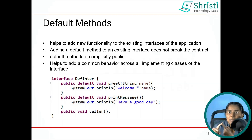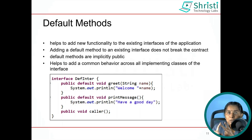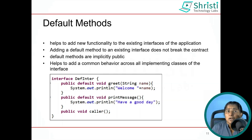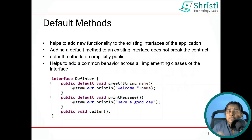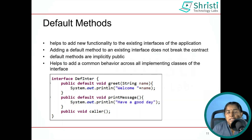Default methods help to add new functionality to an existing interface without breaking the contract. The default methods are public by default. They help to provide a common behavior across all implementation classes. If I want all my implementation classes to have the same behavior, I can use default methods. However, default methods can be overridden by implementation classes to provide new functionality — that is very important to understand.